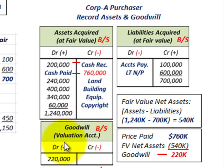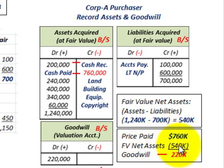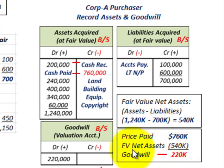Goodwill is recorded as a separate valuation account, debited for $220,000. That amount is simply the price paid of $760,000 less the fair value of the net assets acquired of $540,000, giving us goodwill of $220,000. This goodwill account is a valuation account set up on your balance sheet.